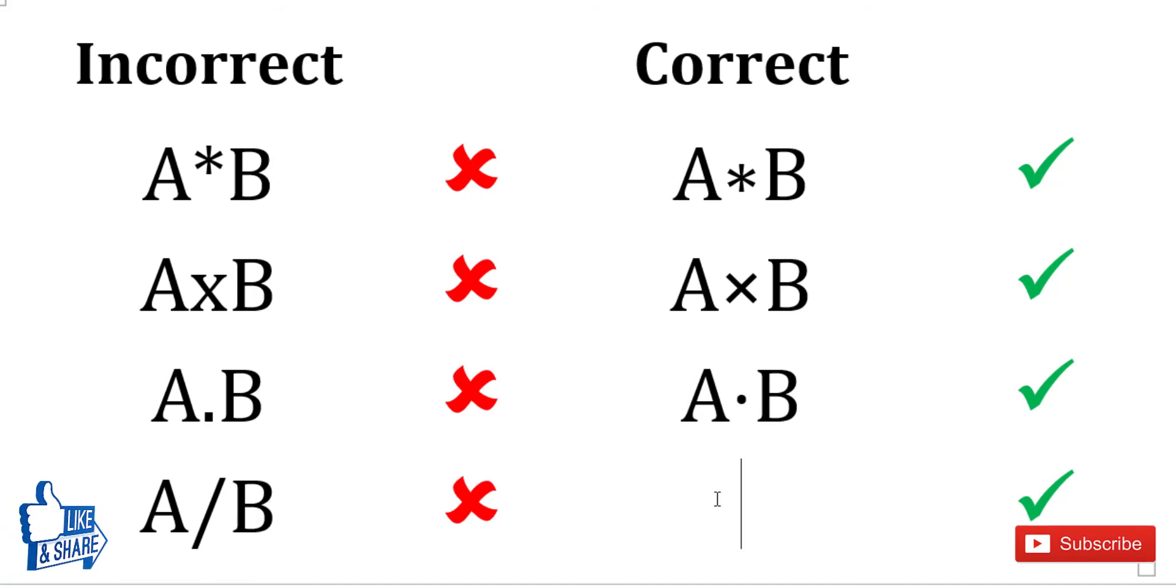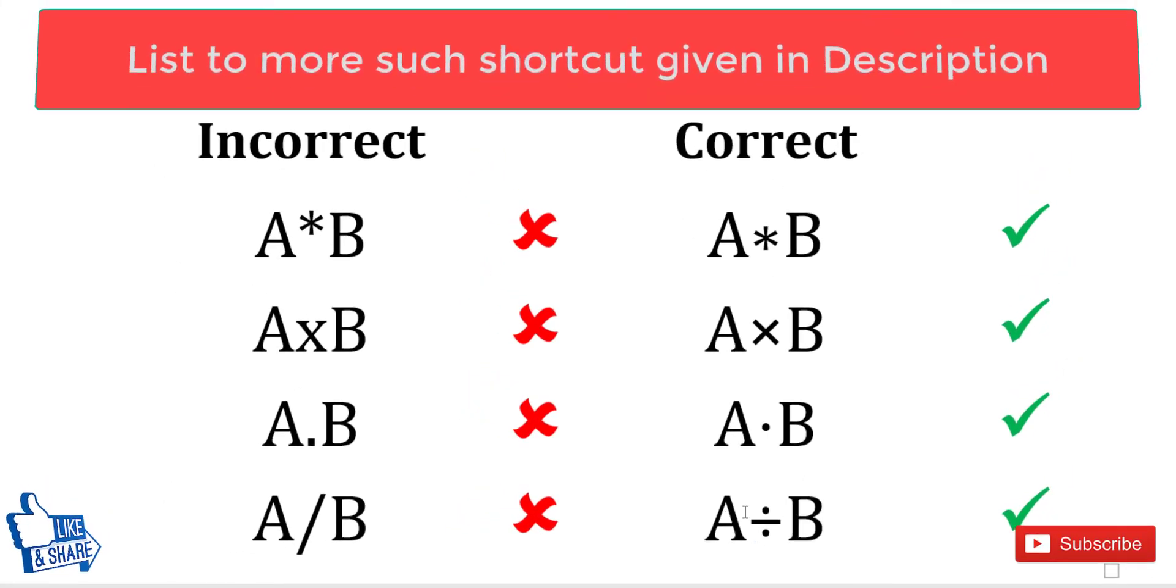The correct way of writing the division sign is backslash-div and then press space. These are the correct ways of writing mathematical symbols.